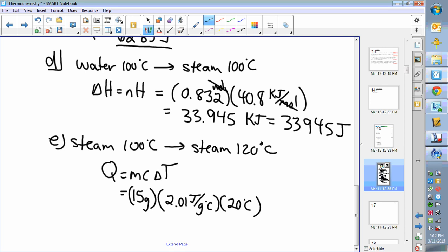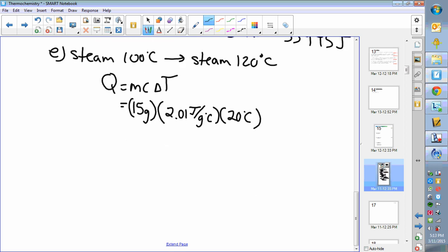15 grams, the heat capacity for steam is 2.01 joules per gram degree celsius, and a temperature change of 20 degrees celsius. 15 times 2.01 times 20, so 603. 15 grams cancels, degree celsius cancels, we have joules, so now we need to add 603 joules.